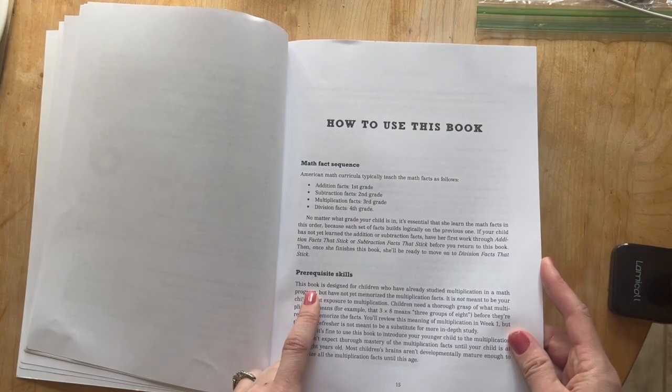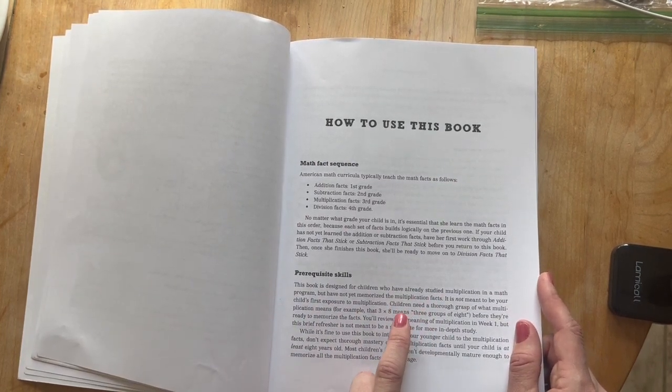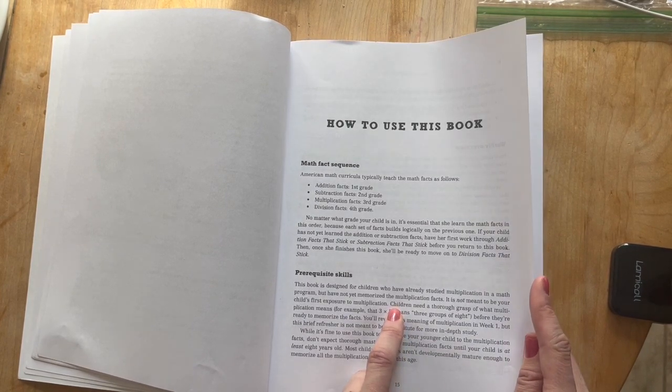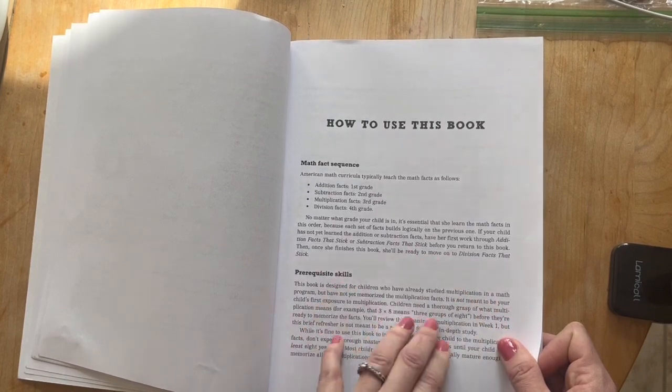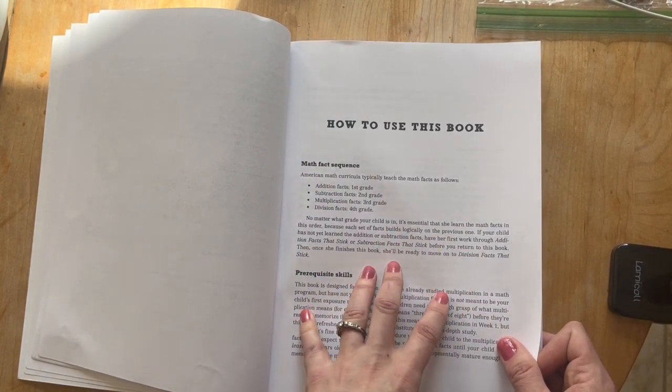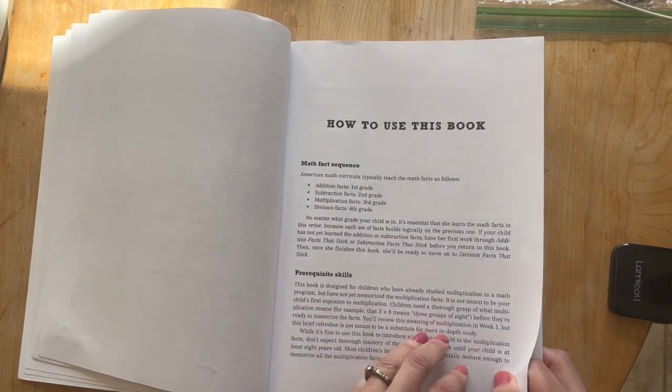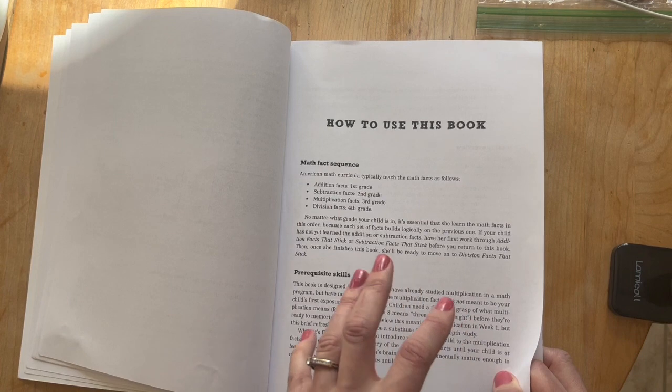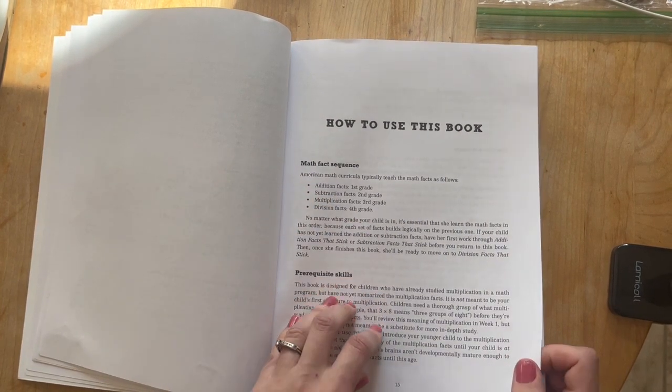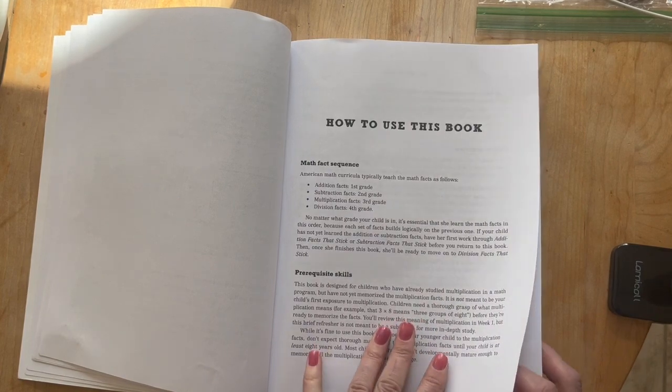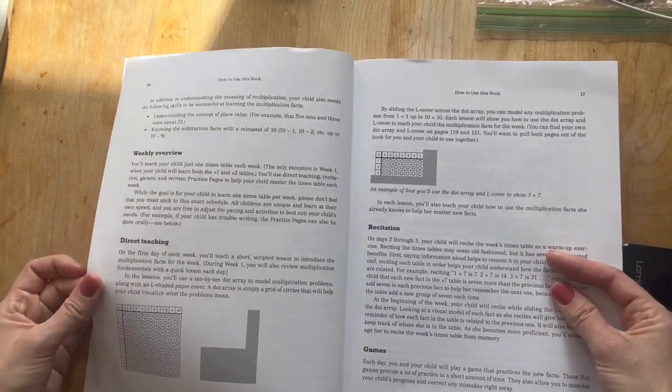For prerequisite skills, this is designed for children who have already studied multiplication in a math program but not yet memorized the multiplication facts. It is not meant to be your child's first exposure to multiplication. Children need a thorough grasp of what multiplication means. For example, that three times eight means three groups of eight before they're ready to memorize the facts. So this is kind of what we're doing right now in my child's Singapore math. They are really digging deep into grids and what three times eight is, what eight times three looks like, how they're different, but the answer is the same. When it comes to recall, we're really slow, and so that's what I'm hoping this will do. So that's a good point to know is just this is not made to be the only multiplication that your child does. This would be like a reinforcement after they've already had an intro to it in their math.